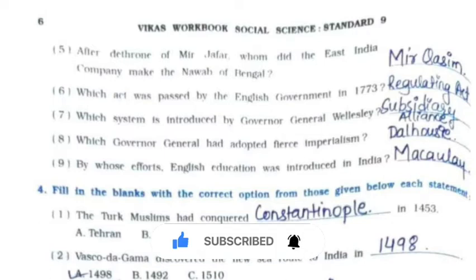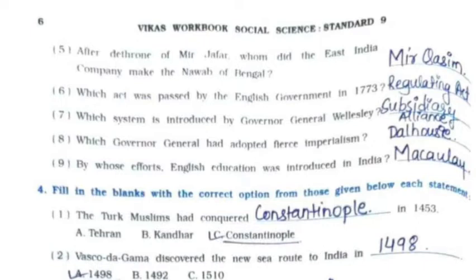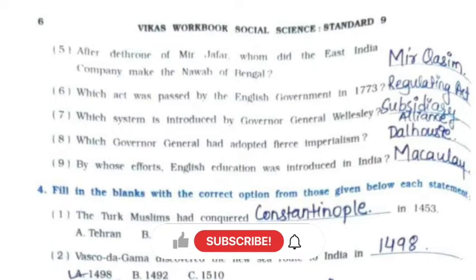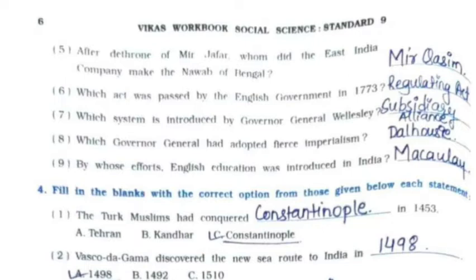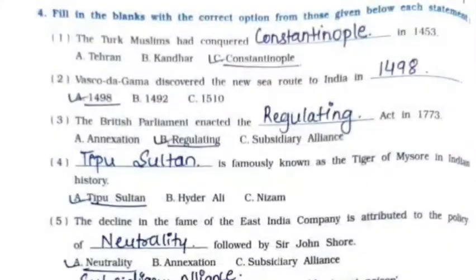Sixth: Which act was passed by the English government in 1773? — It is the Regulating Act. Seventh: Which system was introduced by Governor General Wellesley? — It is the Subsidiary Alliance System. Eighth: Which Governor General adopted fierce imperialism? — It is Dalhousie. Ninth: By whose efforts was English education introduced in India? — It is Macaulay.